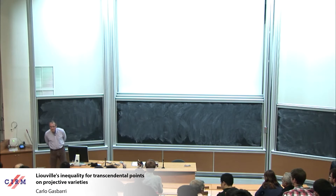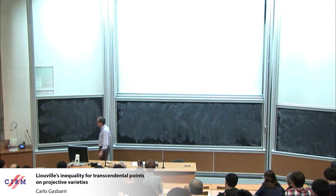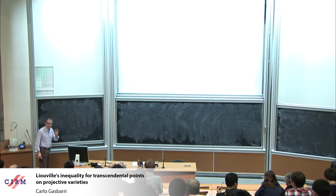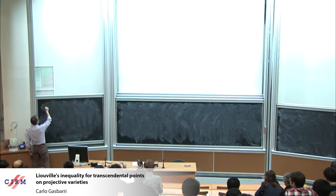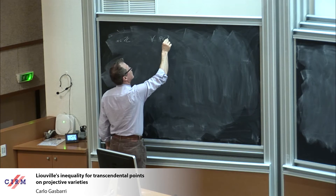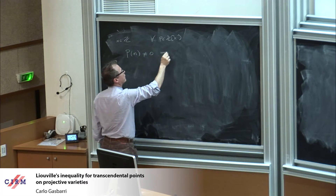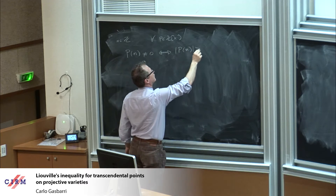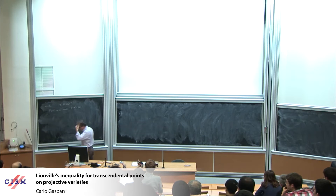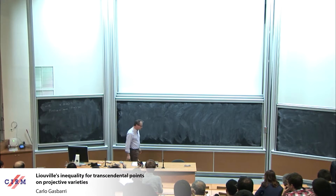First, I would like to thank the organizer for this conference and for giving me the possibility to give a talk. Liouville inequality is a very important tool in arithmetic, in diophantine geometry. I will state it in the simplest form. You take n, an integer, so for every polynomial p in z of x, p of n different from zero is equivalent to p of n bigger or equal than 1. This is Liouville inequality. But this can be generalized to algebraic numbers and even to points in a variety.